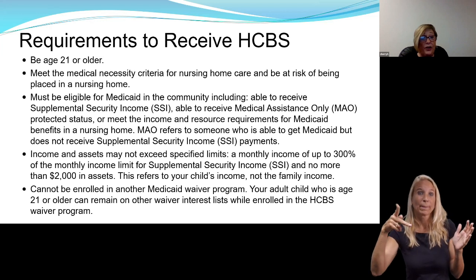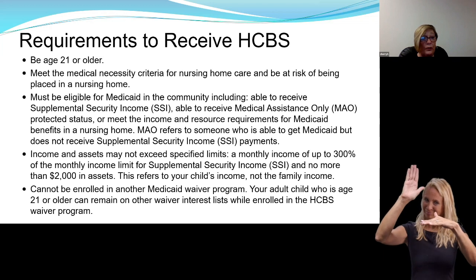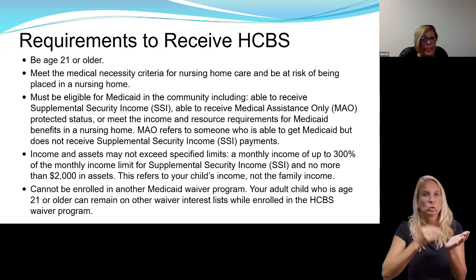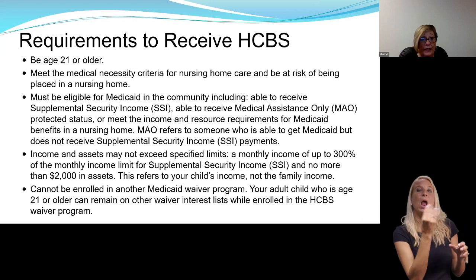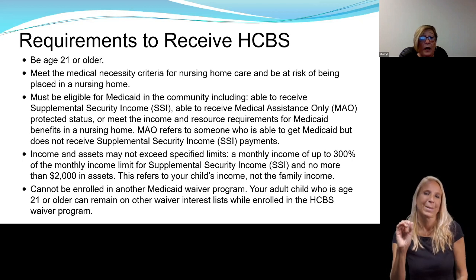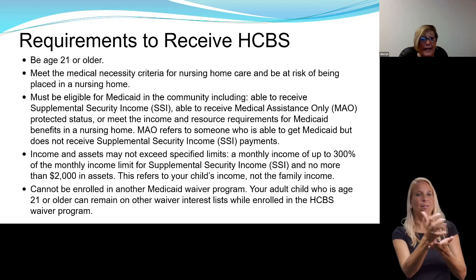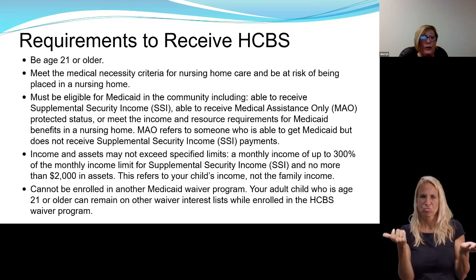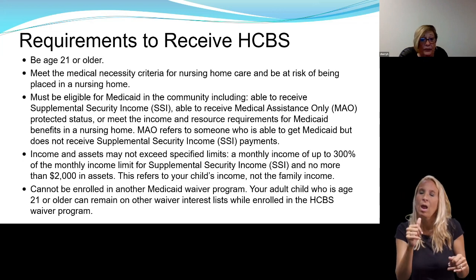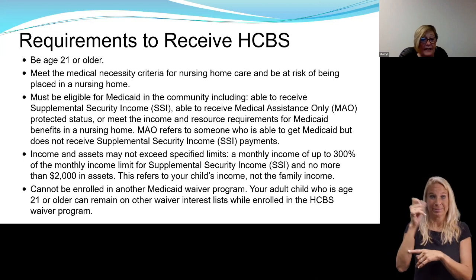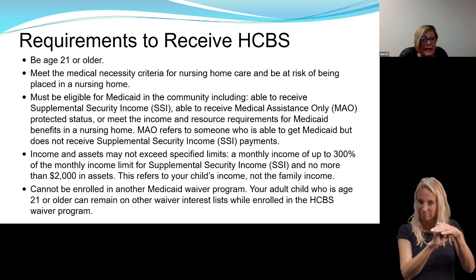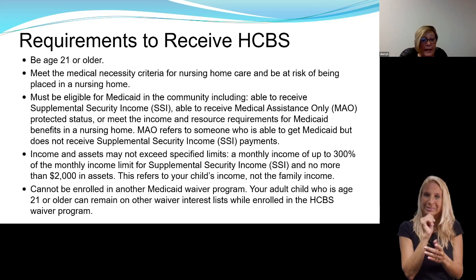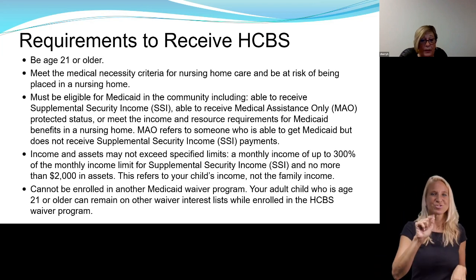The requirements to receive the STAR Plus HCBS waiver: you must be 21 years or older. You must meet medical necessity criteria for nursing home care and be at risk of being placed in a nursing home. You must be eligible for Medicaid in the community, including able to receive SSI, MAO or medical assistance only protected status, or meet the income and resource requirements for Medicaid benefits in a nursing home. MAO refers to someone who is able to access Medicaid but not able to access supplemental security income payments. Income and assets are the same as in the other waivers: 300% of the max of SSI and no more than $2,000 in resources — this refers to the person's income, not family income. You cannot be enrolled in another waiver program while receiving the STAR Plus HCBS waiver.